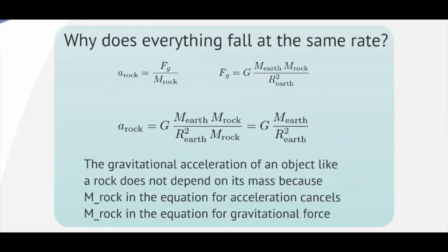So we can use Newton's third law, or Newton's laws, to figure out why everything falls at the same rate. Newton's law says the force is the mass times the acceleration, or the acceleration is the force divided by the mass. So Newton's law of gravitation tells us that the force on a rock is equal to the constant times the product of the masses divided by their separation of their centers squared.